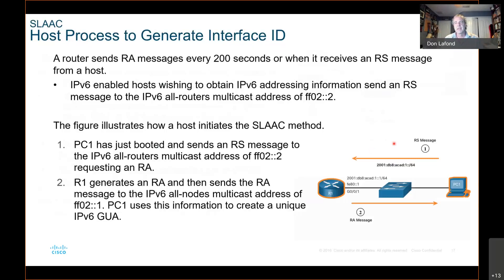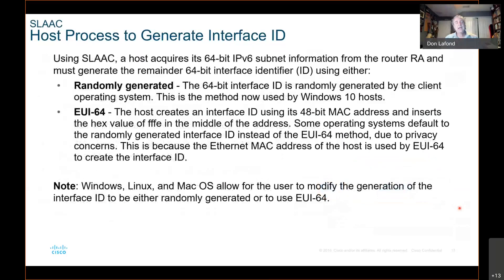In this case, the host sends a router solicitation message saying it needs an address, and it sends it to the broadcast. Router R1 responds with a router advertisement message. Using SLAAC, a host acquires its 64-bit IPv6 subnet information from the router RA and must generate the remaining 64-bit interface ID.